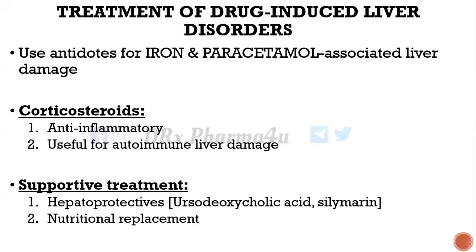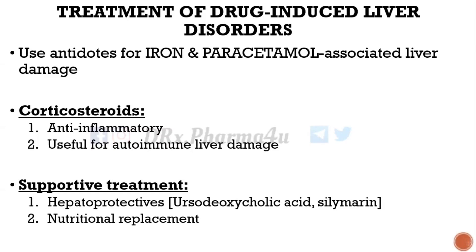Methionine is also a good antidote for paracetamol-associated hepatotoxicity. We can use corticosteroids as well, especially if there is autoimmune liver damage involved. Autoimmunity means your body's immune system considers the liver as an enemy and sends inflammatory mediators toward it, further damaging the liver. So corticosteroids can be used if the liver damage is autoimmune in nature.